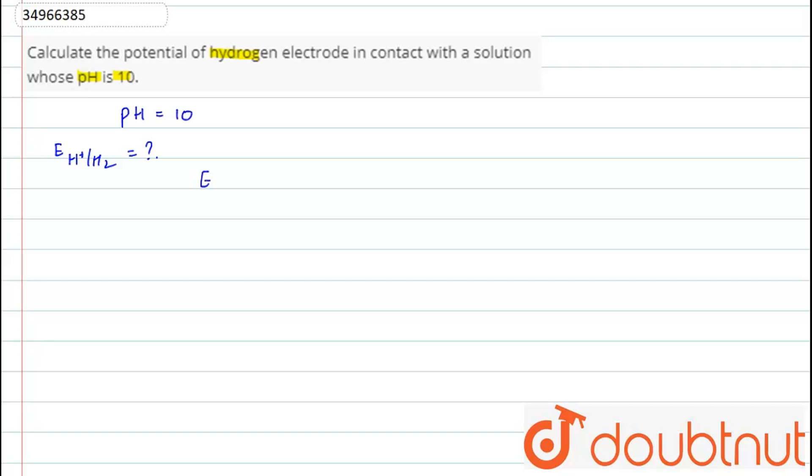As we know, the formula EMF of the cell is equal to standard electrode potential minus 0.0591 divided by n, log of product over reactant concentration.